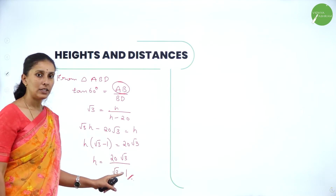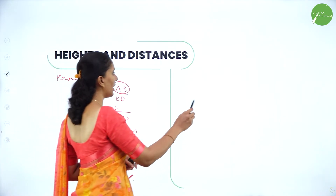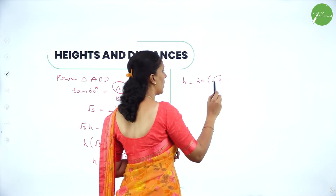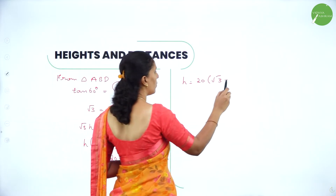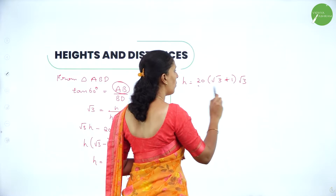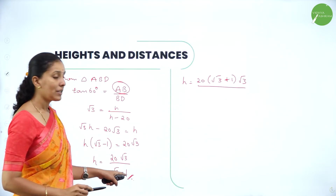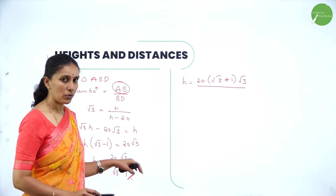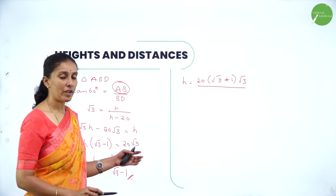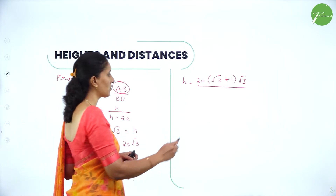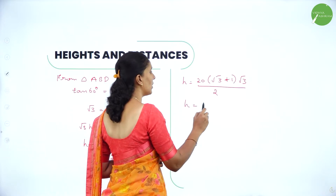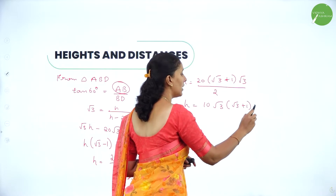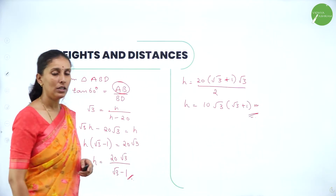To rationalize, multiply by the conjugate (√3 + 1)/(√3 + 1). We get H = 20√3·(√3 + 1) / [(√3 − 1)(√3 + 1)]. The denominator becomes 3 − 1 = 2. This gives us H = 10√3·(√3 + 1) meters, which is the height of the tower.